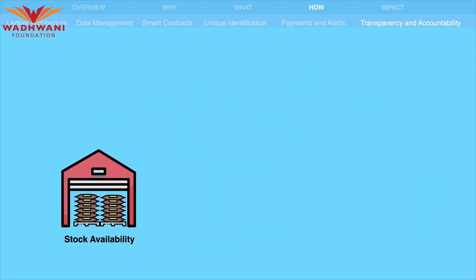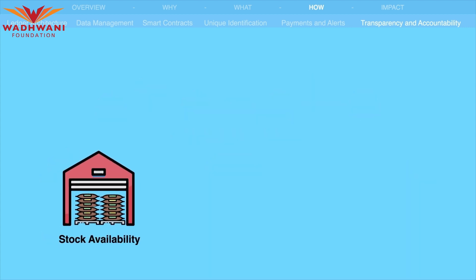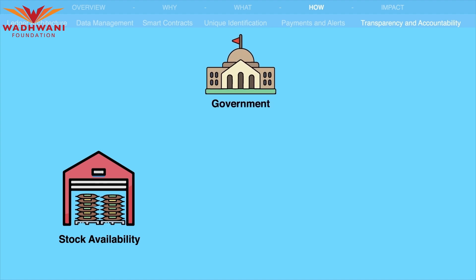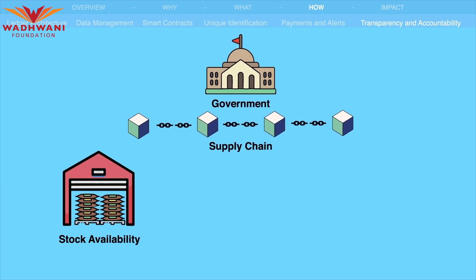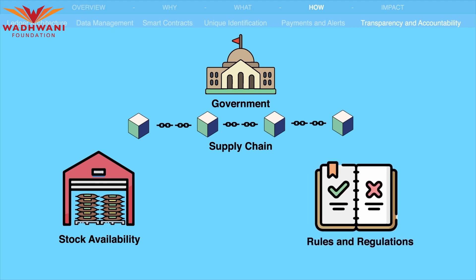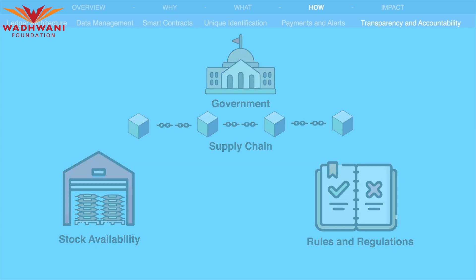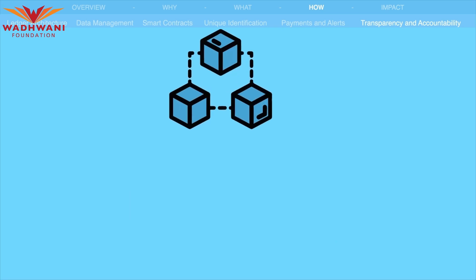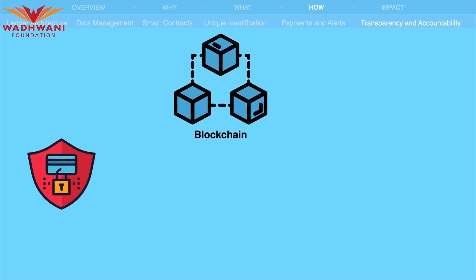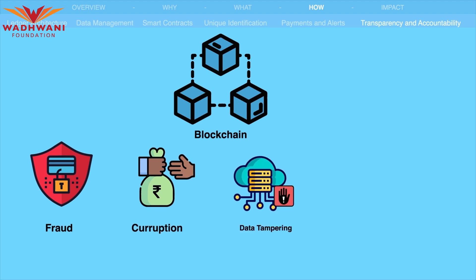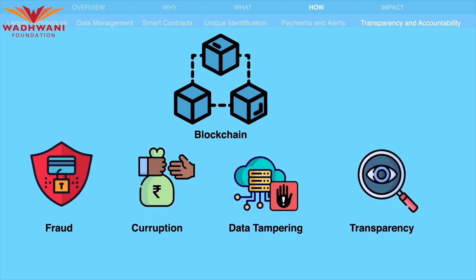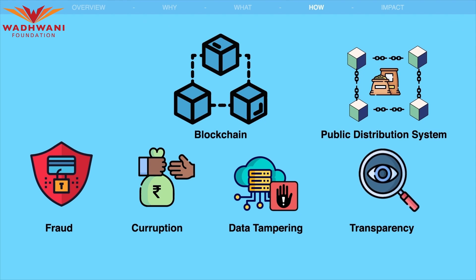The blockchain-based PDS system would provide transparency and accountability by maintaining an immutable record of all transactions and data. This would enable stakeholders, including the government, to have a holistic view of the supply chain, track stock availability, and ensure compliance with rules and regulations. The decentralized nature of the blockchain would also reduce the chances of fraud, corruption, and data tampering.